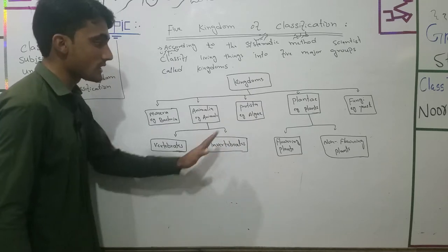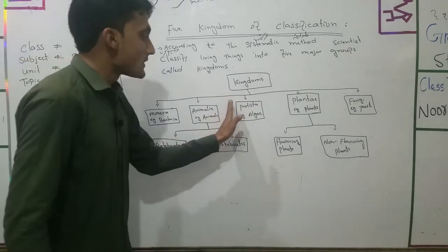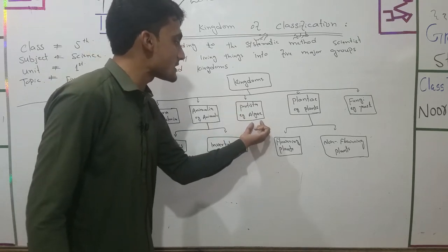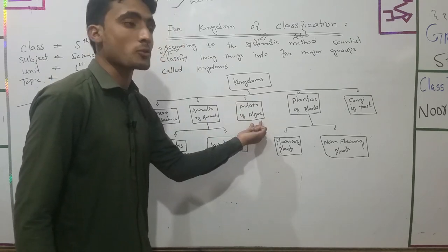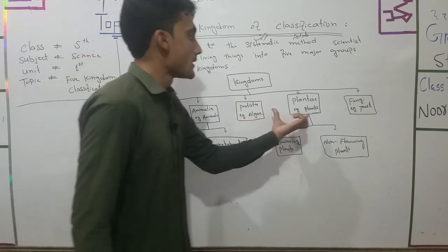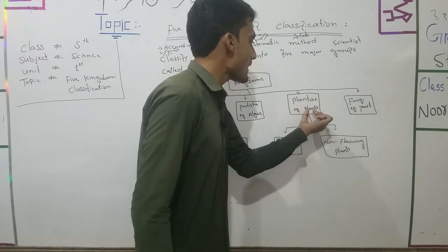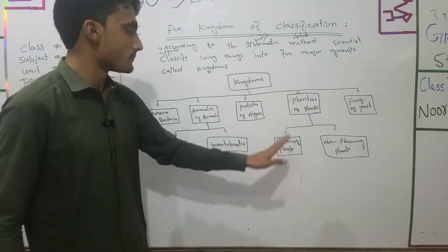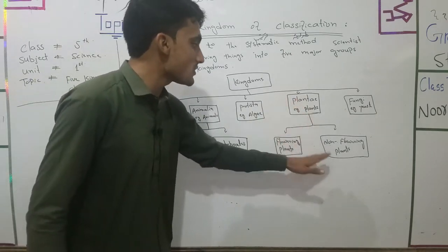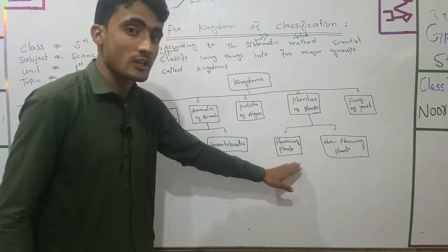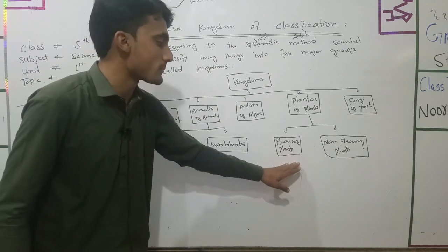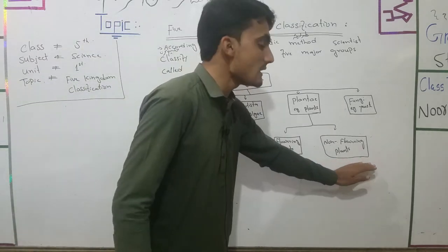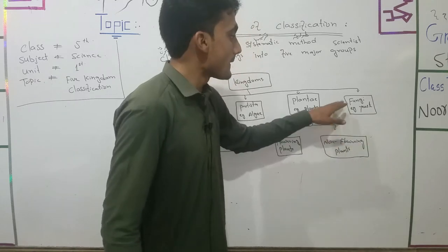The next kingdom is Protista. Protista is similar to Monera, including algae. After Protista comes kingdom Plantae — all plants are included in this kingdom. Kingdom Plantae is further divided into two subgroups: flowering plants and non-flowering plants.